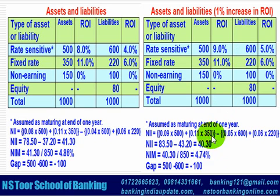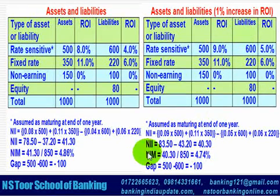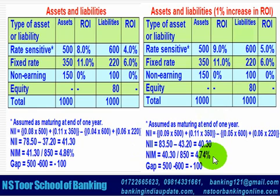On the other hand, if there is a 1% decrease and Rate Sensitive Liabilities are more, then Net Interest Income will increase and Net Interest Margin will also increase. This means the change in interest rates has an impact only if there is a gap between interest-sensitive assets and liabilities — this is the essence of Gap Risk, Repricing Risk, or Mismatch Risk.